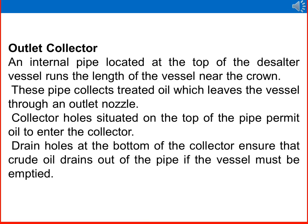The outlet collector is an internal pipe located at the top of the desalter vessel that runs the length of the vessel near the crown. This pipe collects treated oil, which leaves the vessel through an outlet nozzle. Collector holes situated on the top of the pipe permit oil to enter the collector, while drain holes at the bottom of the collector ensure that crude oil drains out of the pipe if the vessel must be emptied.